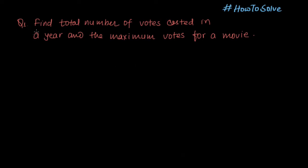The first query is to find the total number of votes casted in a year and the maximum votes for a movie. We will be writing this for the database which we have already imported, that is imdb_tector.